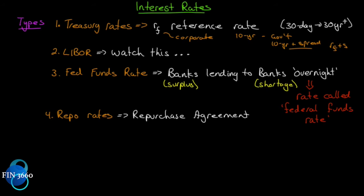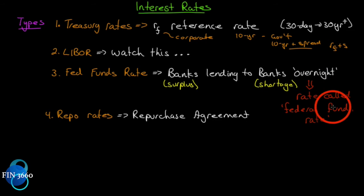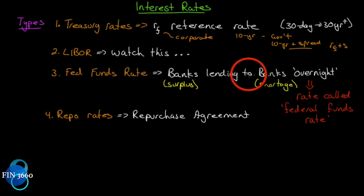The next rate we're going to look at is the Fed funds rate. This is banks lending to banks overnight — banks which have a surplus of funds lending to banks which have a shortage of funds. The overnight rate is called the federal funds rate; that is the rate that they lend to each other at.